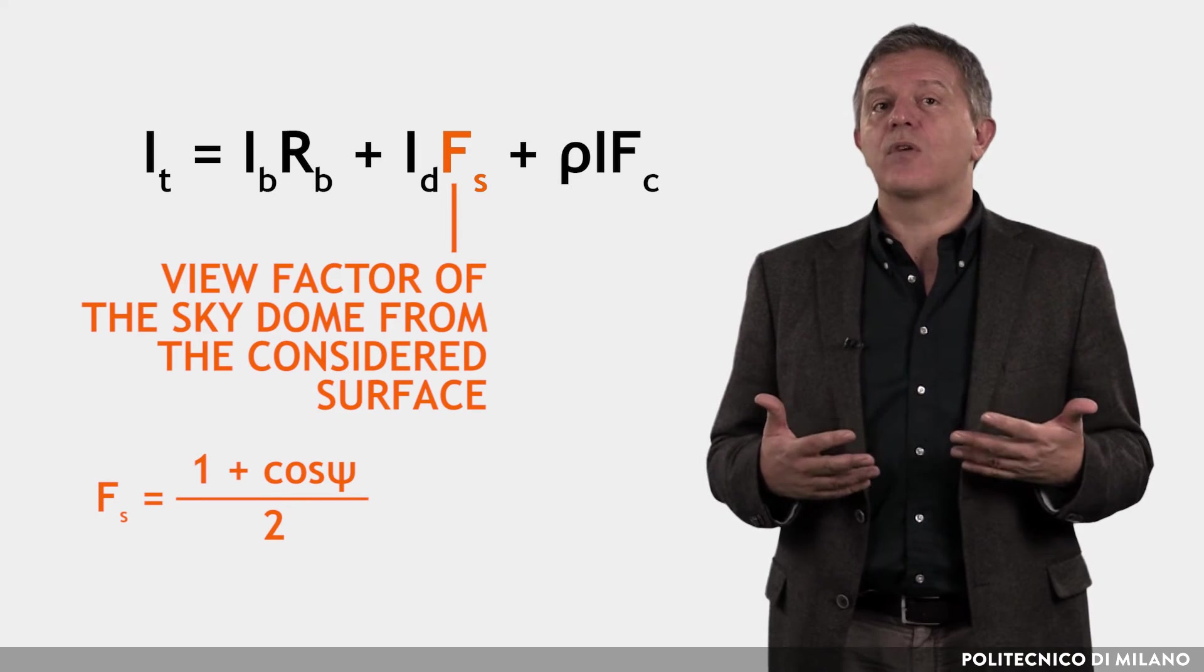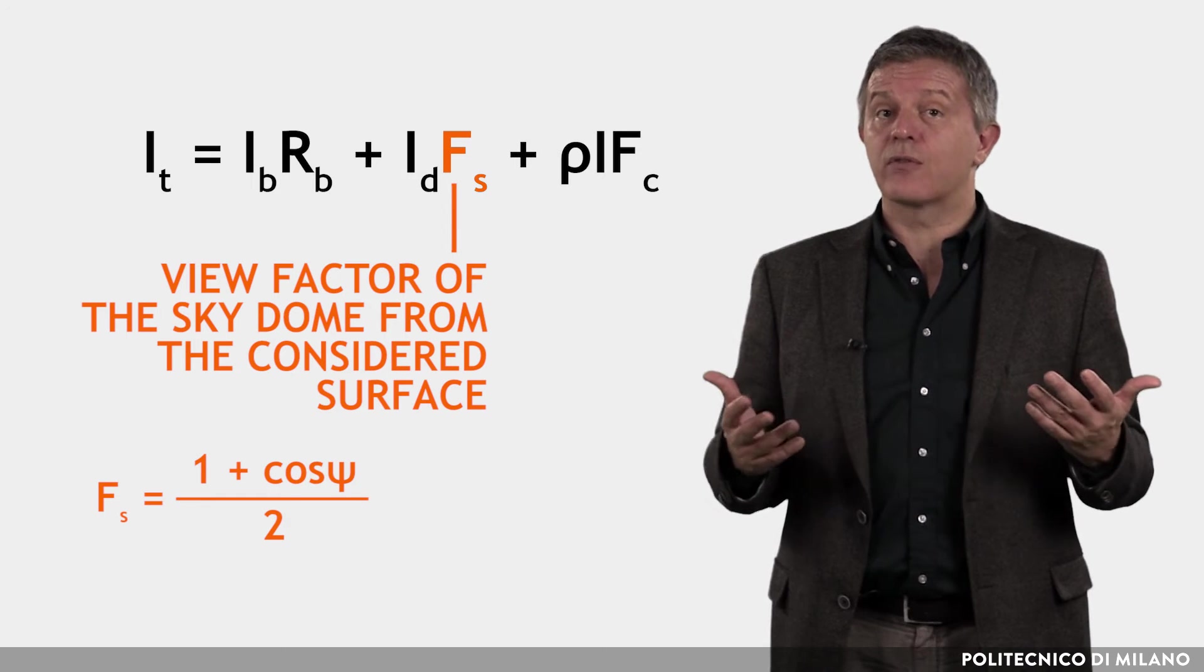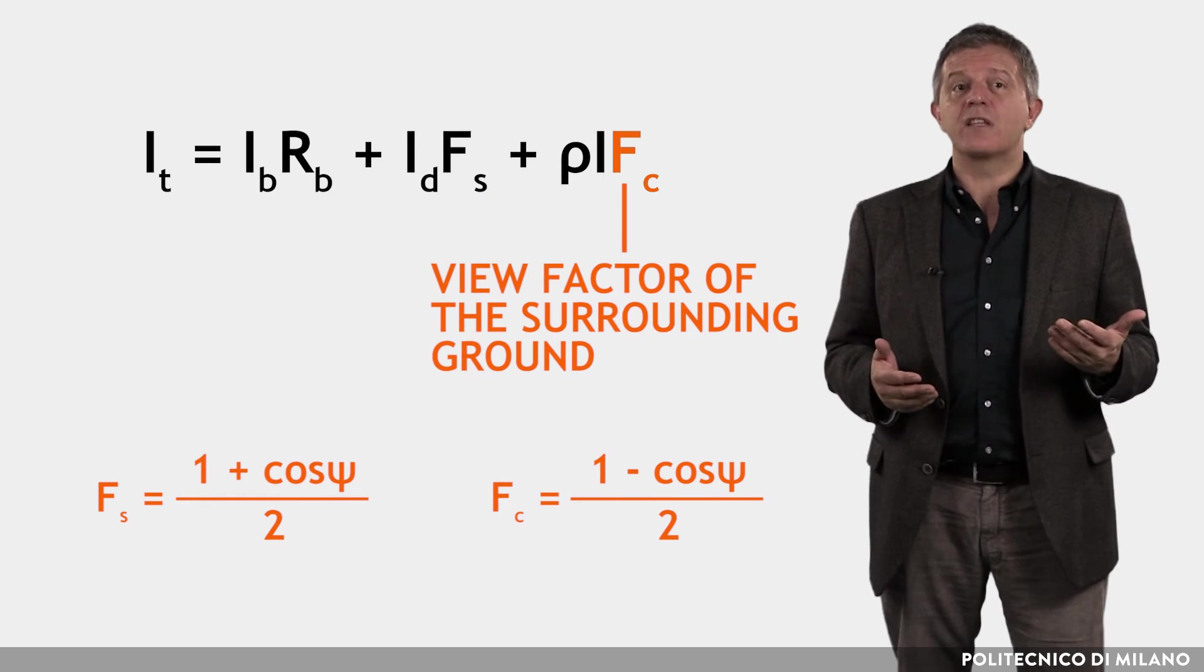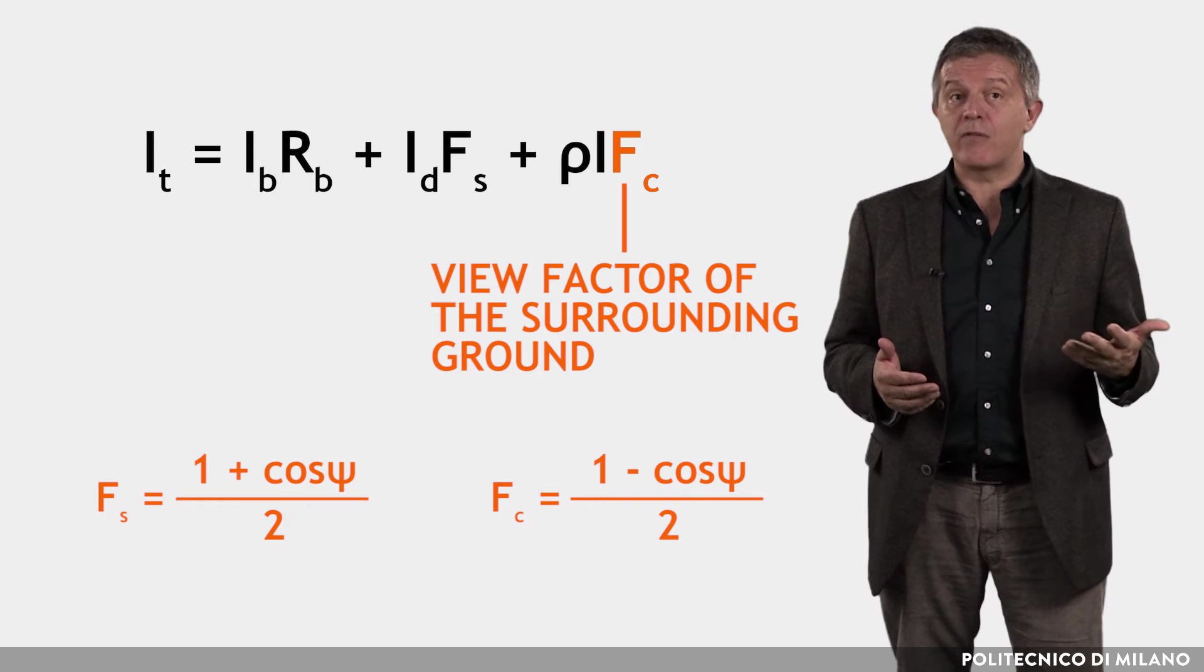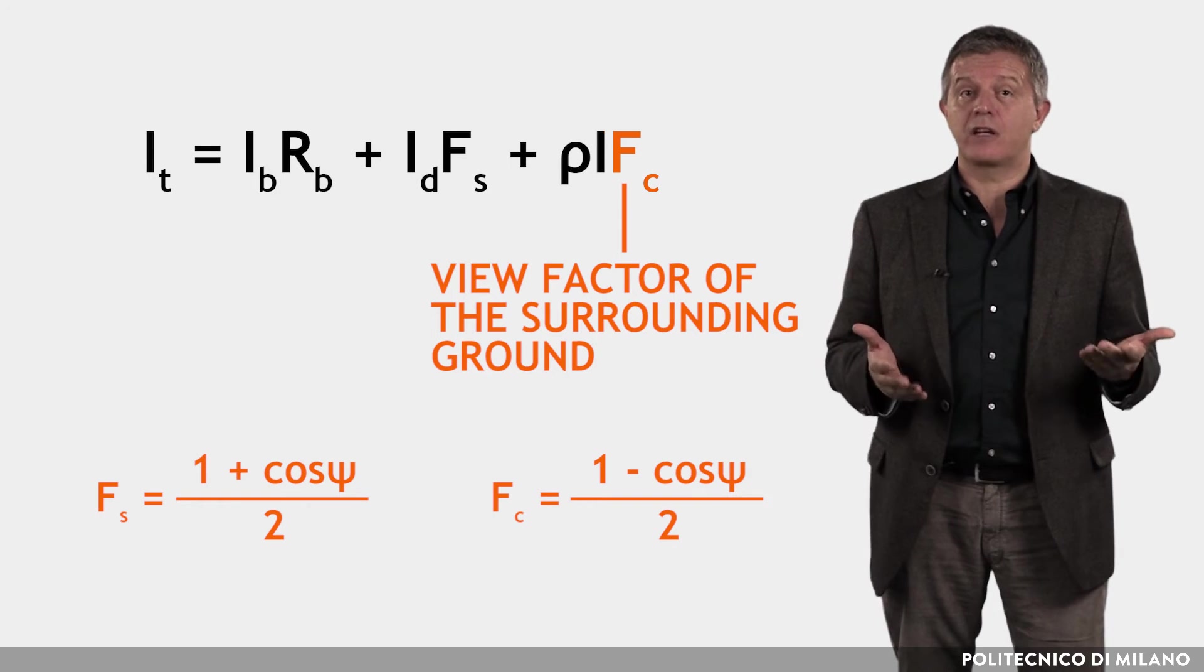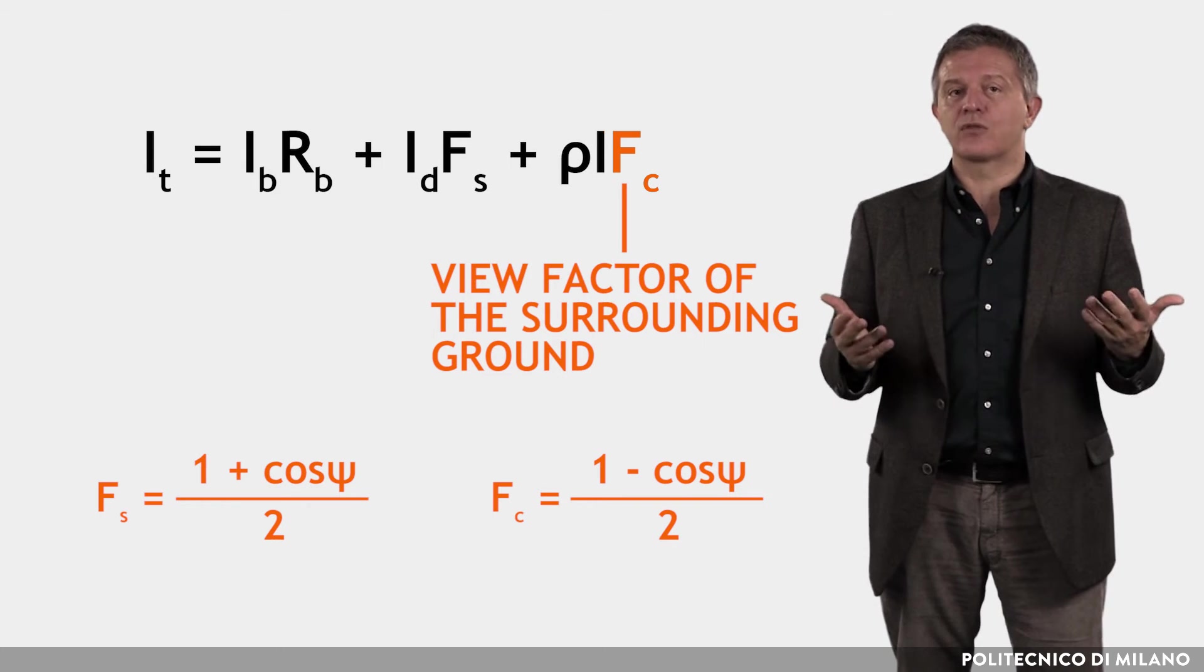Fs is the view factor of the sky dome from the considered surface. Fc represents the view factor of the surrounding ground from which the reflective radiation reaches the considered surface.